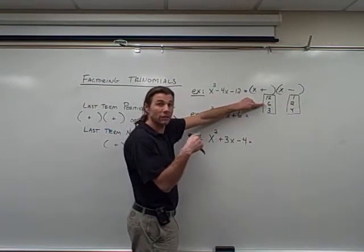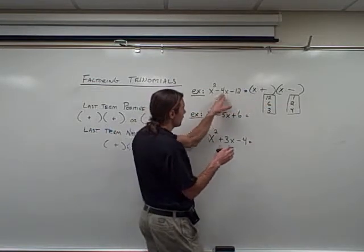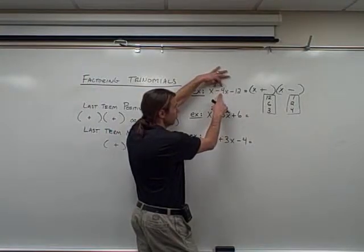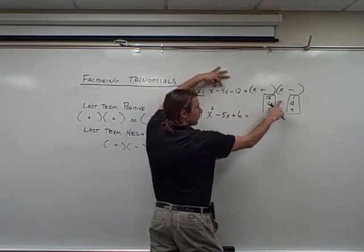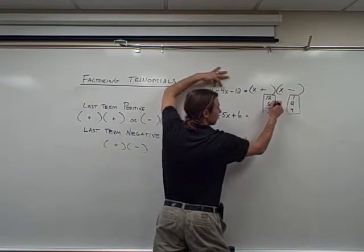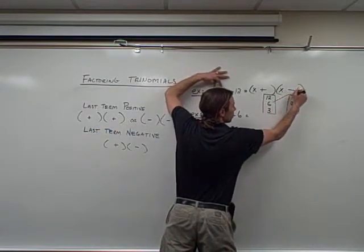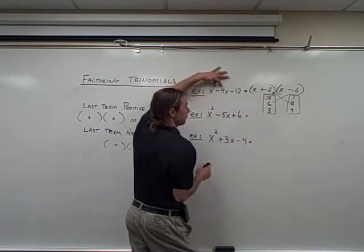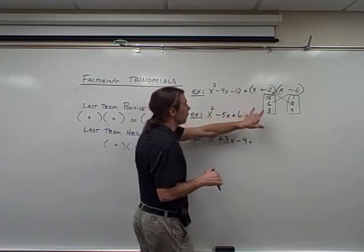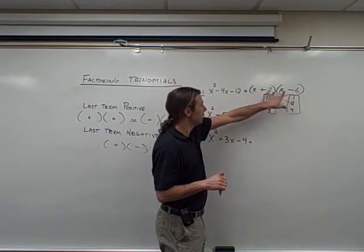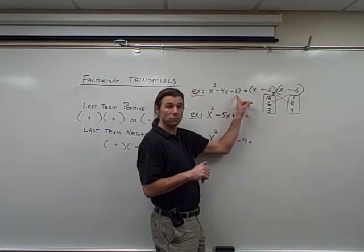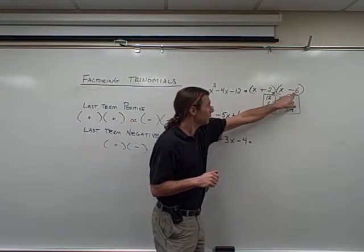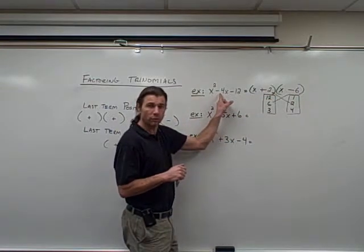Now I just need to make sure I get it in the right spot. I have more negatives when I add these together, so I want to take the 6 and put it on the negative side, and take the 2 and move it to the positive. Positive 2 times negative 6 gives me negative 12, and positive 2 plus negative 6 gives me negative 4 for my middle term.